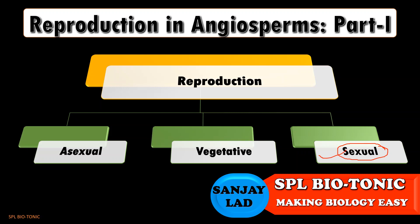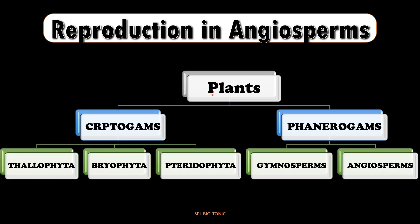The second part of the heading is angiosperms. As we all are familiar with classification of plants, these plants are broadly divided into two groups: cryptogames and phanerogames. Cryptogames are further divided into thallophyta, bryophyta, and pteridophyta, whereas phanerogames are further divided into gymnosperms and angiosperms.